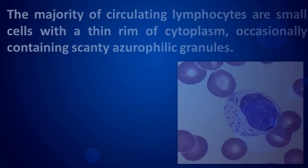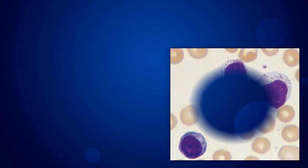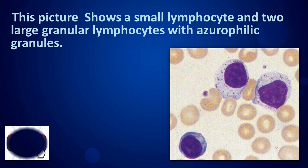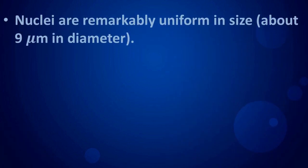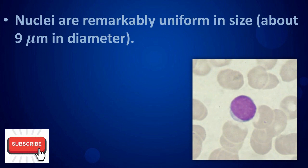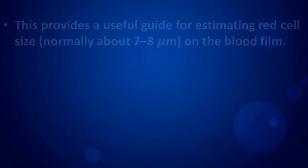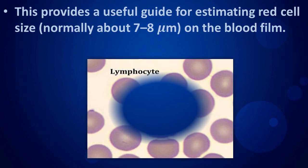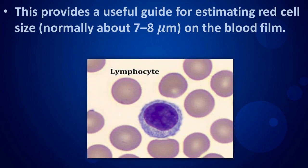This picture shows a small lymphocyte and two large granular lymphocytes with azurophilic granules. Nuclei are remarkably uniform in size, which provides a useful guide for estimating red cell size — normally about 7 to 8 micrometers on the blood film.